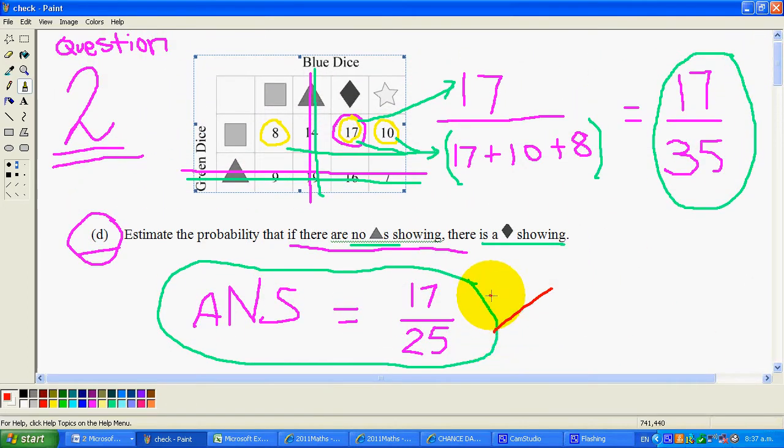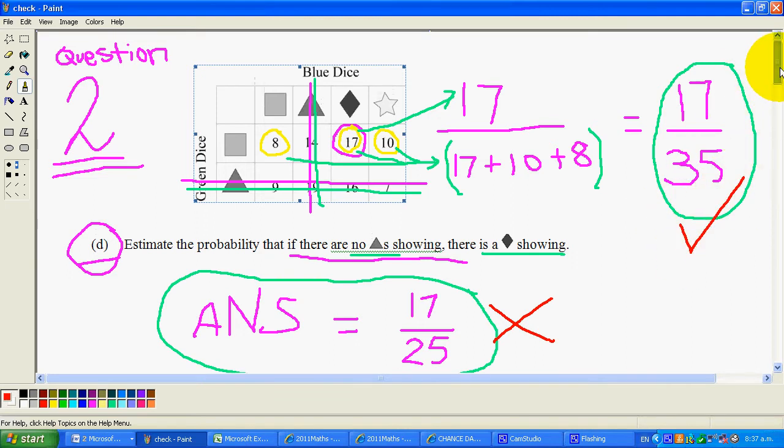This is wrong and this is right. Alright, so the question reads: estimate the probability if there are no triangles showing.